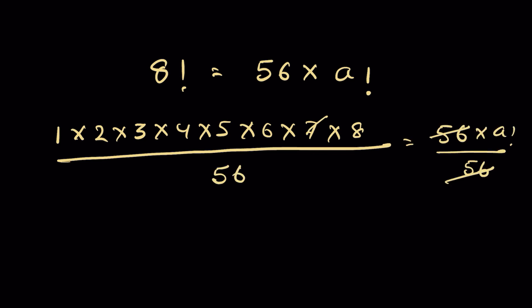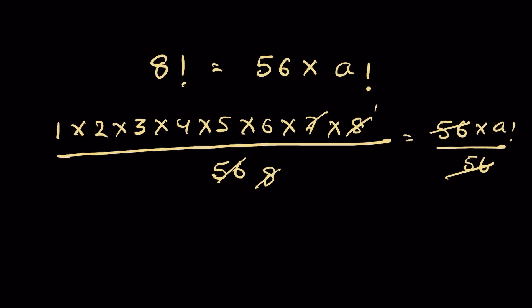7 times 8 is 56, so 7 and 8 get cancelled. Now we have 1 times 2 times 3 times 4 times 5 times 6. The product of all the positive integers till 6 means it is 6 factorial.